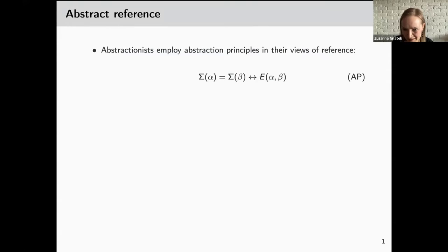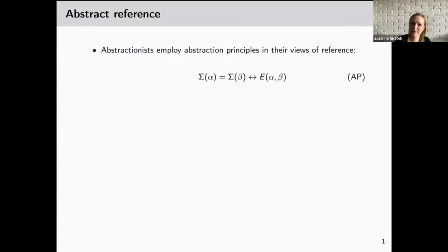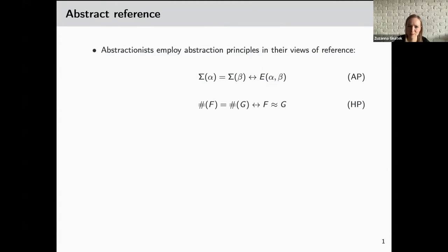Okay, back to my slide, which seems to be working now. They employ abstraction principles in the view of reference that are standardly formalized as you can see on the slide. The common example of an abstraction that is standardly taken to be in good standing is Hume's Principle, by which the number of F is the same as the number of G if and only if the F's and G's are equinumerous, and they see those abstraction principles as fixing the objectual reference of the sigma operator.